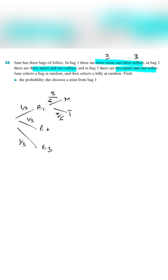Now I want you to draw your attention towards this very important aspect. This event, this is the probability of Jane choosing a mint given that she is in bag one or she has chosen bag one. This is not the overall probability of mint. This is just the probability of Jane choosing a mint given that she is in bag one.